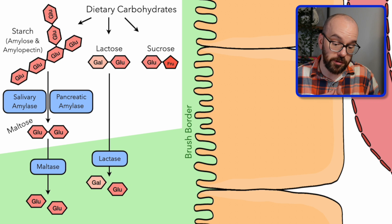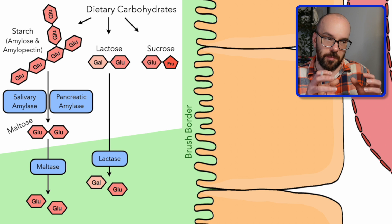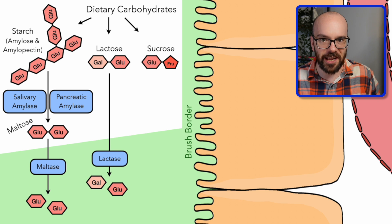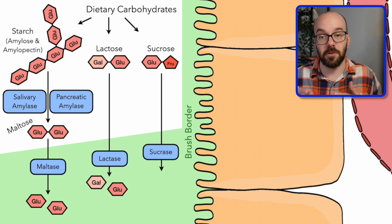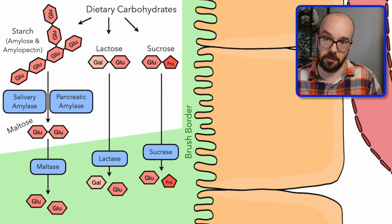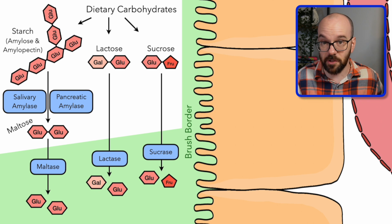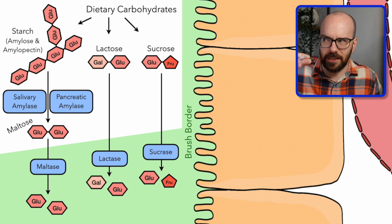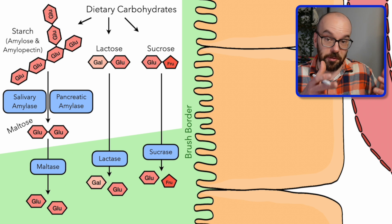Finally, sucrose — found in many fruits we eat as well as any added sugars from sugar cane — is broken down by an enzyme called sucrase into a glucose and a fructose molecule. Of these three monosaccharides — galactose, glucose, and fructose — fructose is by far the sweetest of the three. You can look up sweetness scales online to learn more about which sugars are sweeter than others.